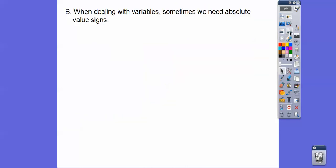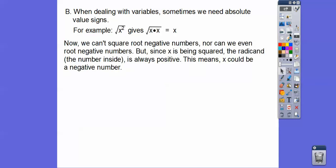When dealing with variables, sometimes we need absolute value signs. For example, the square root of x squared — there's x times x, so two on the inside brings one on the outside. Except since x is being squared, the result is always positive, no matter if x is positive or negative. We can't do even roots of negative numbers. But since x is being squared, the number inside is always positive, so x could be some negative number and we'd still be okay because the squared part would be positive.